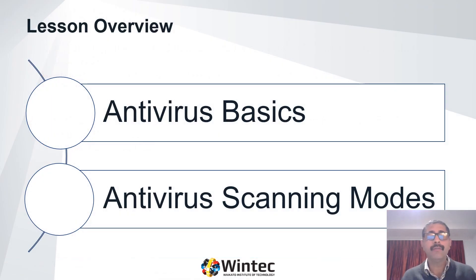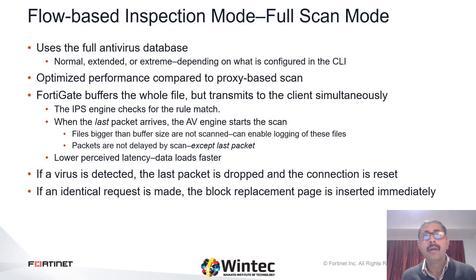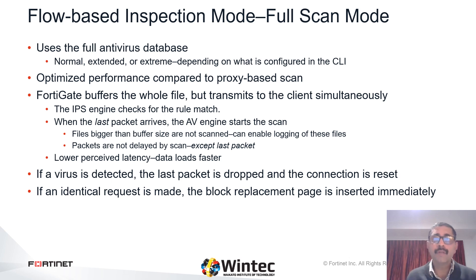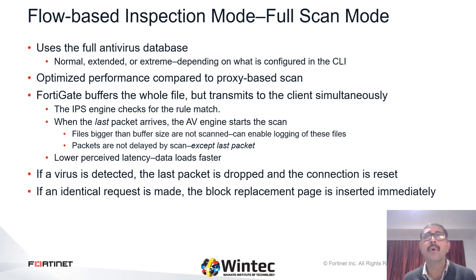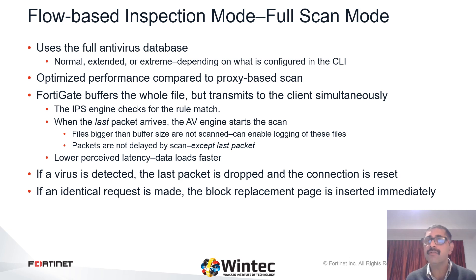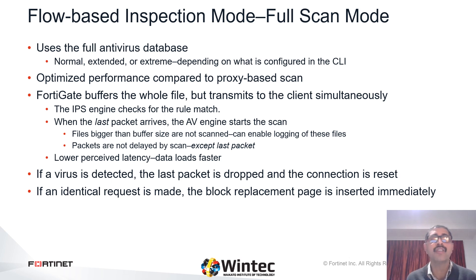Let's now look at the various antivirus scanning modes. Whether the antivirus is operating in flow-based or proxy-based inspection modes, two scanning mode options are always available: full scan mode and quick scan mode. Full scan mode uses the full antivirus database — that is normal, extended, or extreme depending on what is configured in the CLI — and the IPS engine to examine the network traffic. The flow inspection mode engine starts scanning with the raw packet; it does not necessarily scan in order and must extract the payload to discover viral payloads, regardless of surrounding protocol details. Because the file is transmitted simultaneously, flow inspection mode scanning consumes more CPU cycles. However, depending on the FortiGate model, some operations may be performed by a specialized FortiASIC chip, which improves performance.